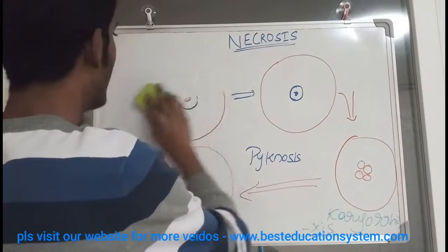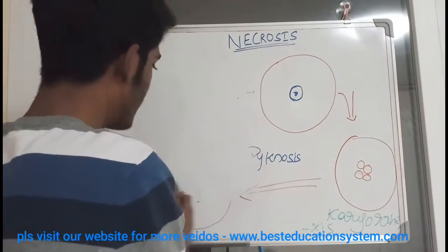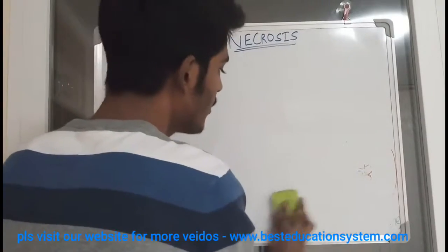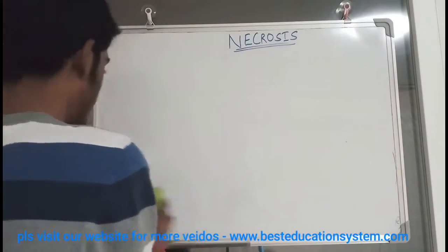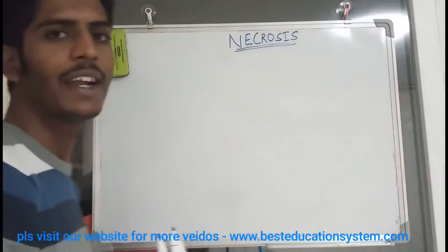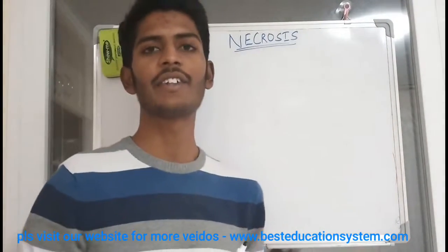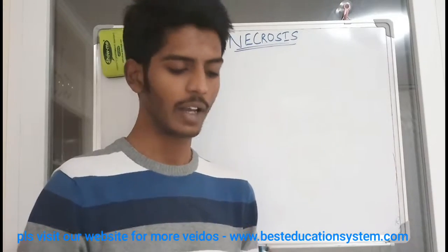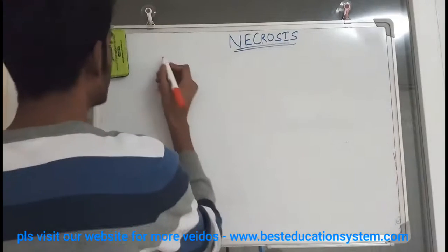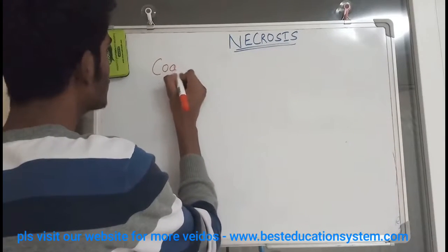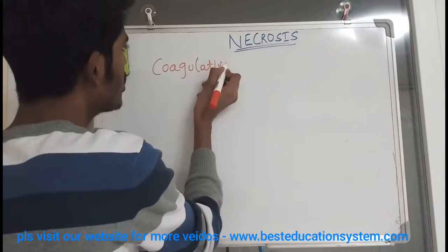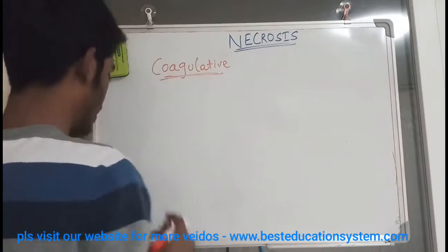Now I would like to discuss about the types of necrosis. We have five types: coagulative, liquefactive, fat necrosis, caseous necrosis, and fibrinoid necrosis. So first I will start with coagulative necrosis.